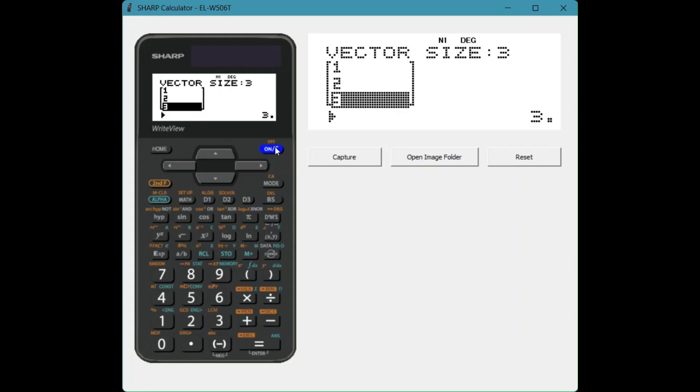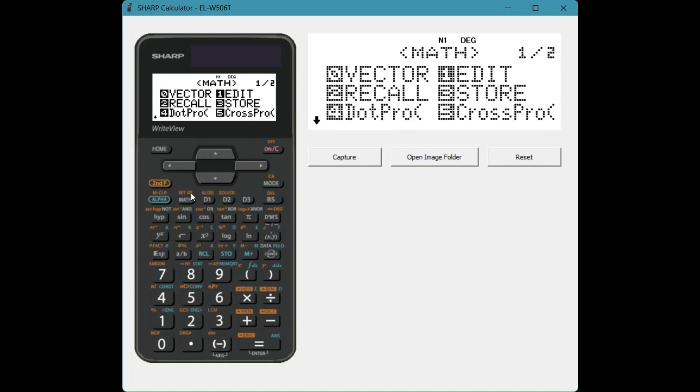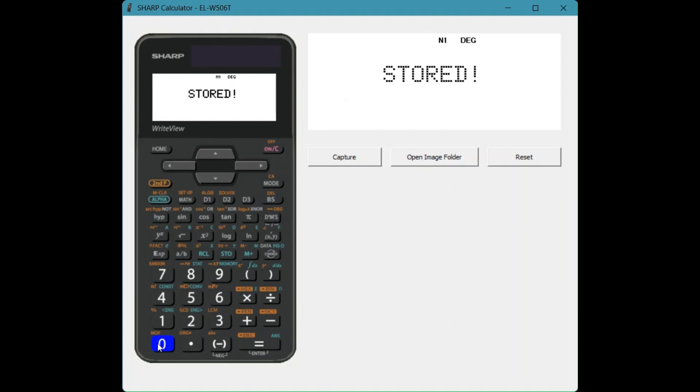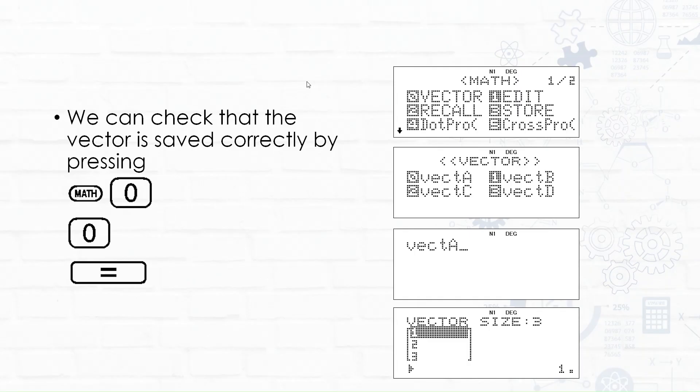So we press on, and then of course we say math, and we're going to choose 3 for store, and then we just choose the vector name we would like to put it into. So that would be zero, and voila. We can then check that the vector is saved correctly by pressing math zero, and then zero for our first vector that we chose, vector A, and pressing equals, and it will then show us our vector. Let's do that quickly now on the calculator.